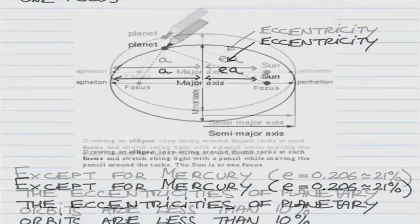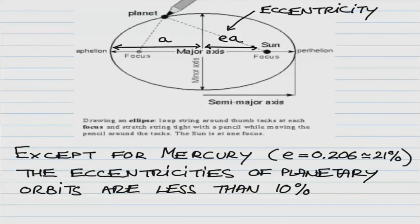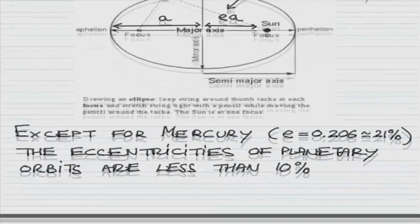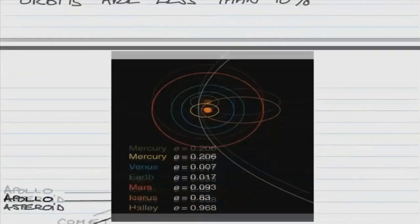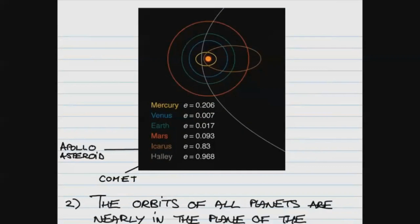Now, what are the eccentricities of planetary orbits? It turns out that except for planet Mercury, which has eccentricity of about 21%, the eccentricities of remaining seven planets are less than 10%. So they deviate by a small amount from a perfect circle, as you can see from this diagram here.